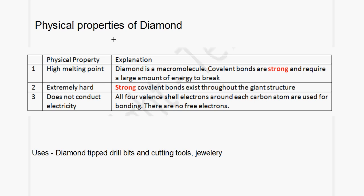Let us now look at the physical properties of diamond. The first physical property is that diamond has a high melting point. Diamond is a macromolecule, and the covalent bonds are strong and require a large amount of energy to break — this is why it has a high melting point. The second physical property is that diamond is extremely hard. The strong covalent bonds exist throughout this giant structure, and this is what makes diamond so hard.